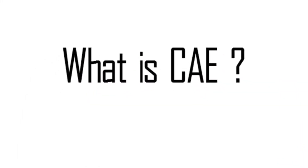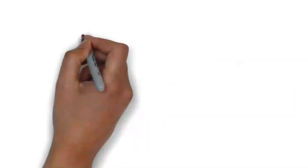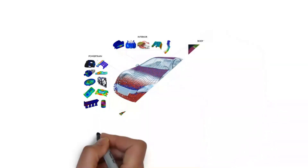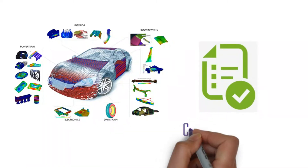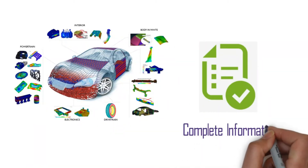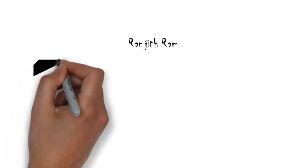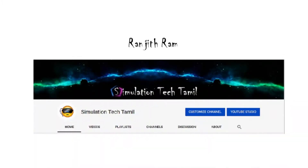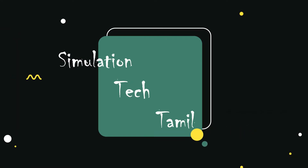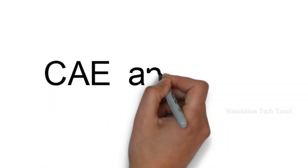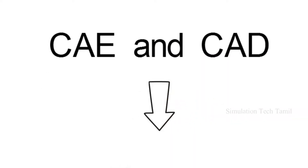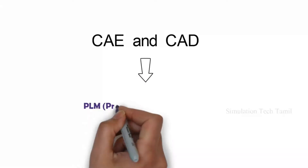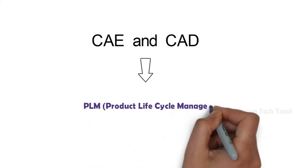What is the relationship between CAE and CAD? In industry, the CAE department is important. We will talk about complete information in this video. My name is Ranjit, you can see Simulation Tech. CAE and CAD — in these two topics, we have a concept called PLM: Product Life Cycle Management.